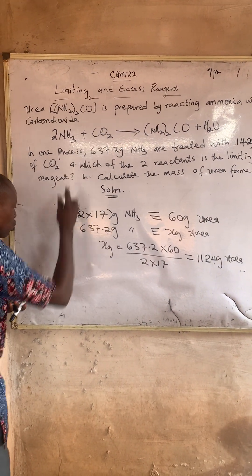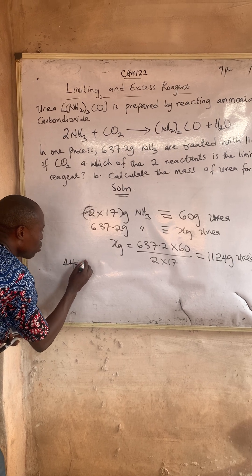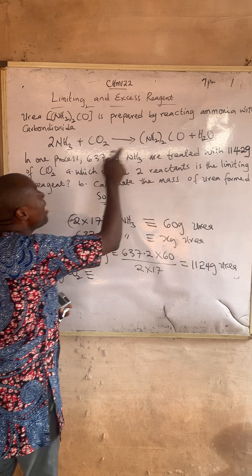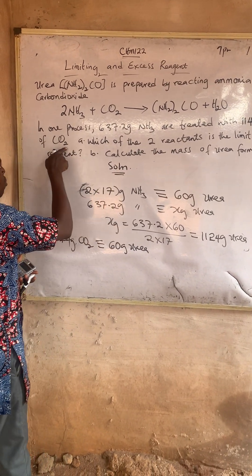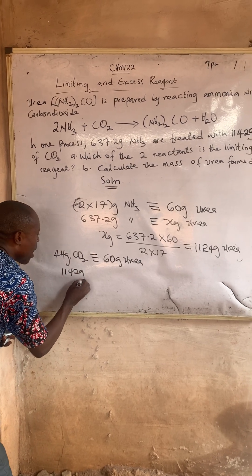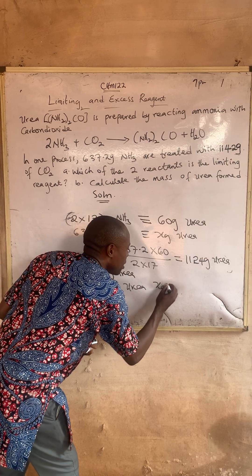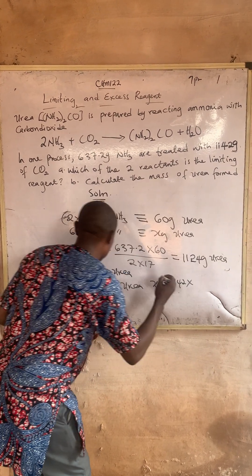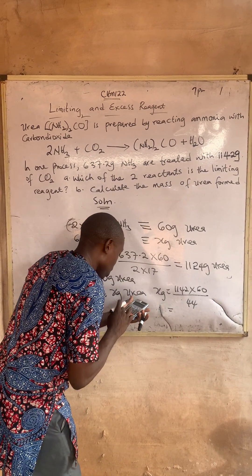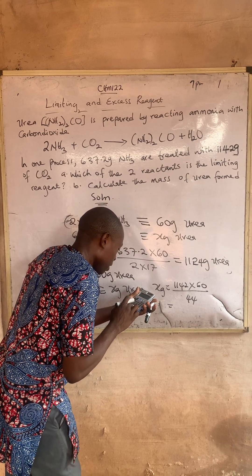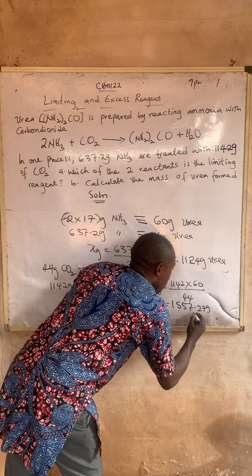Then we move to CO2. The molar mass of CO2 is 44. So 44 grams of CO2 is equivalent to 60 grams of Urea. The mass of CO2 given is 1142 grams. So: S grams = 1142 × 60 ÷ 44. When we calculate, the answer is 1557.27 grams of Urea from CO2.